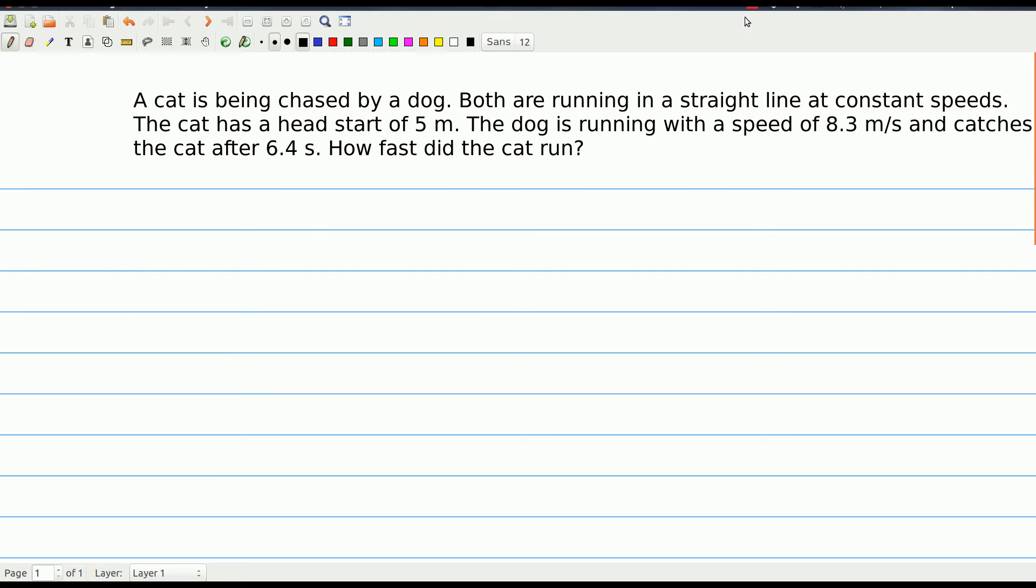Okay, it's time for another example problem. This one is from homework 2. So we've got a cat being chased by a dog. Both are running in a straight line at constant speeds. The cat has a head start of 5 meters. The dog is running with a speed of 8.3 meters per second and catches the cat after 6.4 seconds. How fast did the cat run?